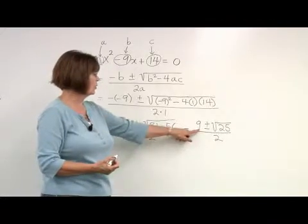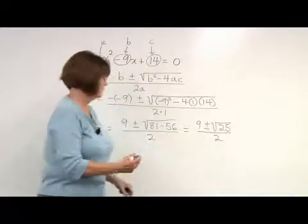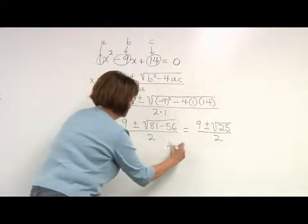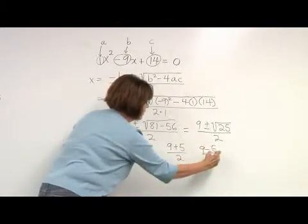So our two roots are 9 plus 5 over 2, or 9 minus 5 over 2.